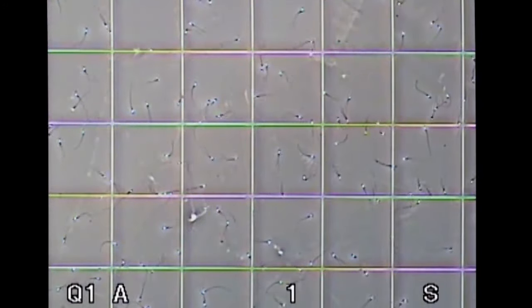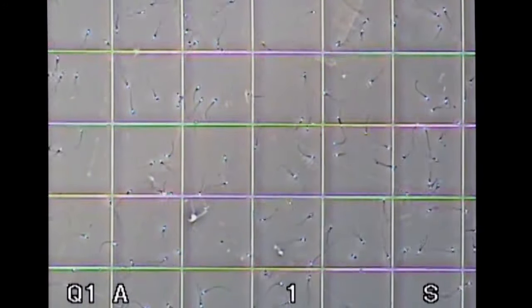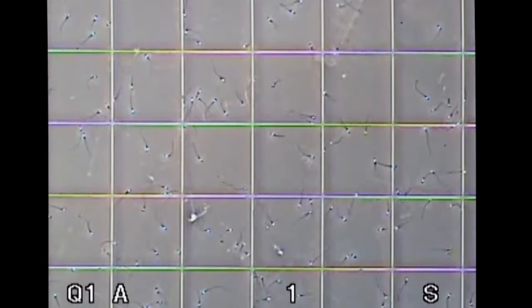The motility percentage is determined by calculating the percentage of sperm on the grid that are actively swimming.